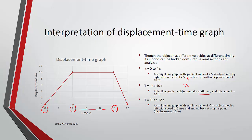The last part, from 10 to 12, has a negative gradient with a value of negative 5, meaning the object is moving left at a speed of 5 meters per second, ending up at the original point since the displacement is 0.